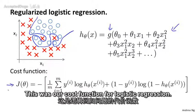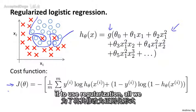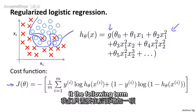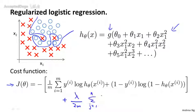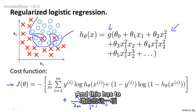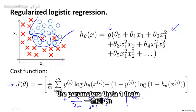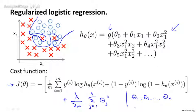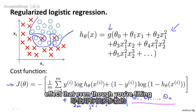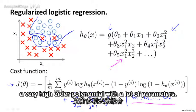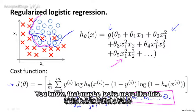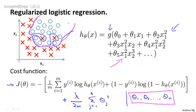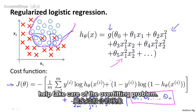This was our cost function for logistic regression, and if we want to modify it to use regularization, all we need to do is add to it the following term: plus λ/(2m) times the sum from j=1 (sum from j=1 rather than j=0) of θ_j squared. This has the effect of penalizing the parameters θ₁, θ₂, and so on, up to θ_n from being too large. If you do this, then even though you're fitting a very high-order polynomial with a lot of parameters, so long as you apply regularization and keep the parameters small, you're more likely to get a decision boundary that looks more reasonable for separating out the positive and negative examples.